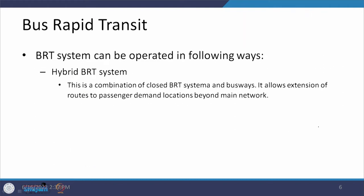A hybrid BRT system is a combination of closed BRT and busways. In most cases it is a closed system so speeds are quite high, but when it opens at some locations the speeds are lower — however it provides an extension of services. That is a positive side of using the hybrid system.